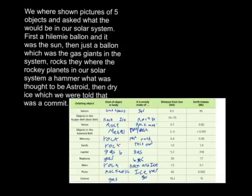Mercury is a rock planet. Earth is a rock planet. Jupiter is a gas giant. Neptune is a gas giant. Mars is a rock planet. Pluto is a rock and ice.